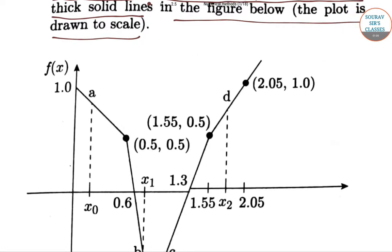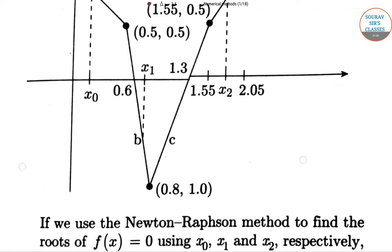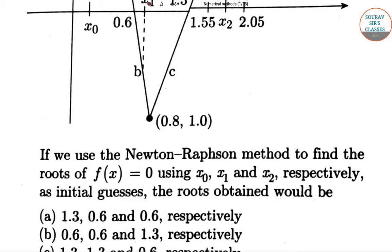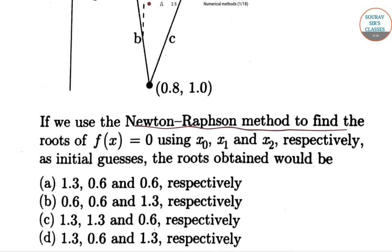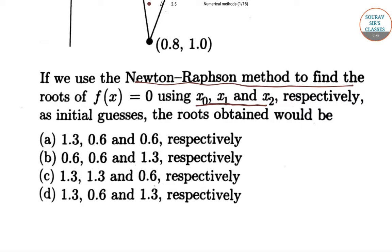Now what is being asked: If we use the Newton-Raphson method to find the roots of fx equal to 0 using x₀, x₁, and x₂ respectively, the roots obtained would be what? If you want to find the root of any equation, we have to equal it to 0. So using x₀, x₁, x₂, what are the roots so obtained? Let's go ahead and find the solution.